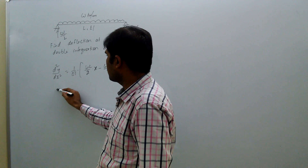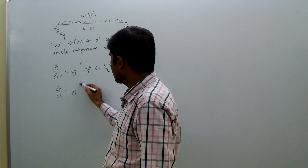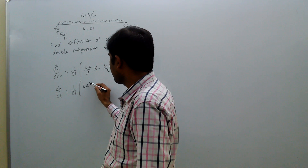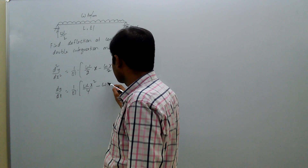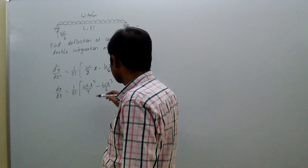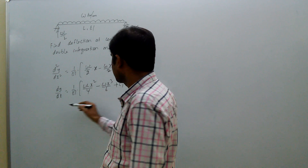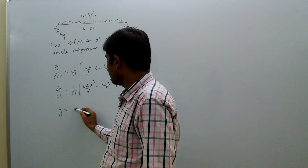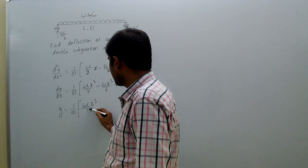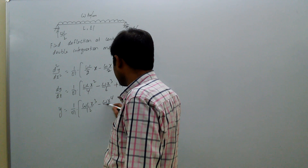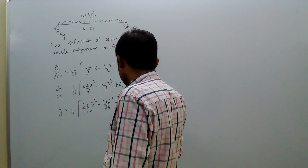Now, integrating: dy/dx equal to 1 by EI into WL x squared by 4 minus Wx cubed by 6 plus C1, and y equal to 1 by EI into WL x cubed by 12 minus Wx to the power 4 by 24 plus C1 x plus C2.